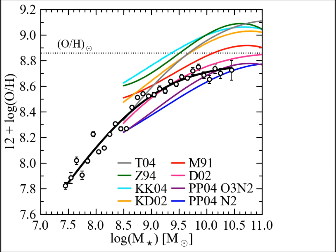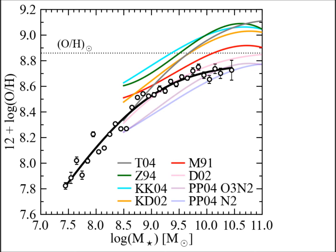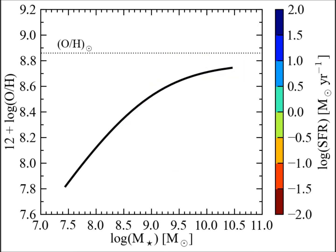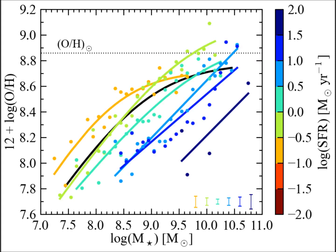By contrast, strong-line mass-metallicity relations rise more slowly and turn over at higher masses. The mass-metallicity relations based on empirical strong-line calibrations have similar normalizations as the direct method mass-metallicity relation, but mass-metallicity relations based on theoretical strong-line calibrations lie up to 0.3 dex higher. Strong-line mass-metallicity relations have a second-order dependence on star formation rate, which we also find for the direct method mass-metallicity relation, as indicated by the colored points and lines that show the mass-metallicity relations at fixed star formation rate. Compared to strong-line mass-metallicity relations, the direct method mass-metallicity relation depends more heavily on star formation rate by a factor of 2 to 3, resulting in a larger spread between the mass-metallicity relations at fixed star formation rate.